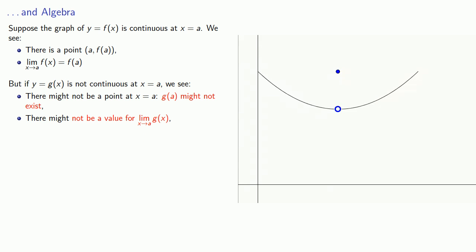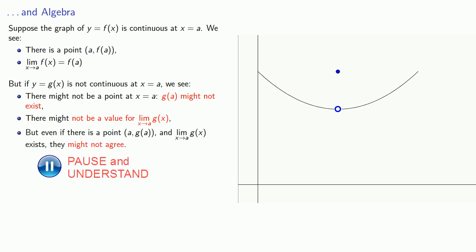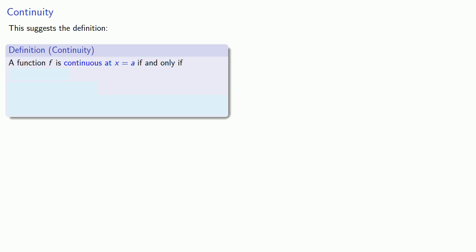And even if there is a point (a, g(a)) and the limit exists, they might not agree. And this suggests the following definition for continuity.